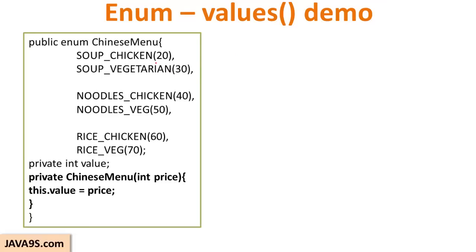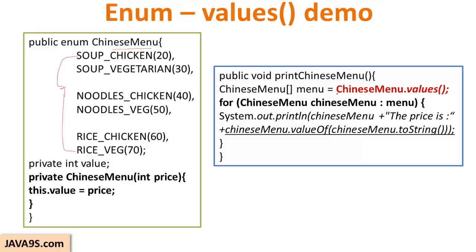Let us see in detail what the values() method does. I have the ChineseMenu enum class defined and I want to iterate through all the constants to get their prices. Earlier with interfaces there was no provision to iterate through constants to get those values, but with enums it is possible using the values() method. Remember that values() is actually a static method. It returns an array of type ChineseMenu, and you can iterate through the objects to get the price of each Chinese item using a get method.